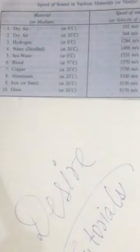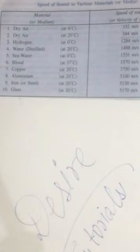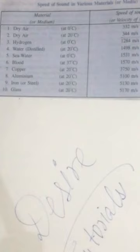In distilled water at 20 degrees Celsius, the speed of sound is 1498 meters per second. In sea water at 0 degrees Celsius, it is 1531 meters per second. In blood at 37 degrees Celsius, it is 1570 meters per second. In copper at 20 degrees Celsius, it is 3750 meters per second.